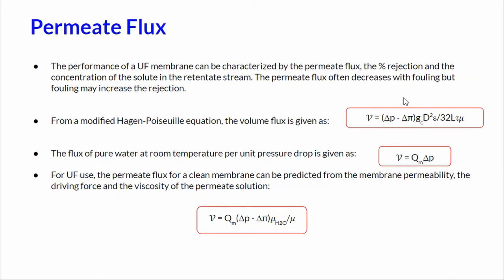Regarding the permeate flux, for a clear membrane, the water is assumed to pass through small pores of the selective layer by laminar flow where the driving force is the pressure difference Δp minus the difference in osmotic pressures across the membrane, that is Δπ. From the Hagen-Poiseuille equation, the volume flux is given as the first equation. The flux of pure water at room temperature per unit pressure drop is given as the second equation. Since it is difficult to get the independent measurements of ε, d, τ, and l for use here, the corrective can be taken through the membrane permeability qm.